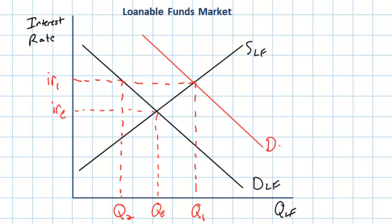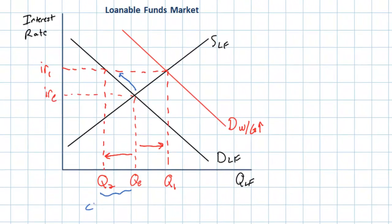The new demand curve on this graph represented the demand for loanable funds with the increase in government spending. Q1 in this graph represents the new level of total investment in the economy including the increase in government spending. However, Q2 represents the new level of private investment and consumption in the economy resulting from the higher equilibrium interest rates caused by the increased demand for loanable funds. There is a crowding out effect represented by the difference between QE, which was the quantity of private investment before the government's need to borrow, and Q2, which is the quantity of private investment following the increase in interest rates resulting from the government's borrowing from the private sector.